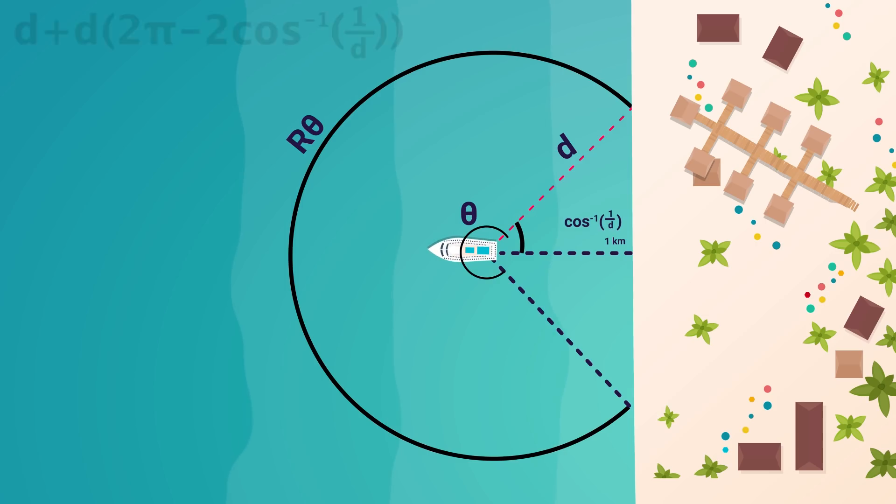So, this would be the equation for the total distance traveled, in regards to the worst case scenario, for any value d. This part here is just r times theta, or 2 pi, the full circle, minus those inner angles.